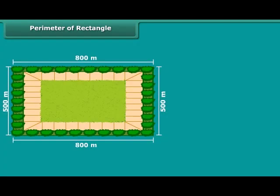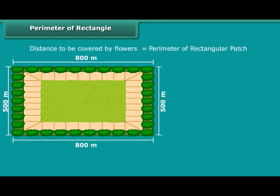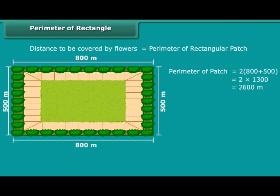We wish to plant flowers on all sides of a rectangular patch of land whose length is 800 meters and breadth is 500 meters. Calculate the total distance to be covered by flowers. The distance to be covered will equal the perimeter of the rectangular patch. The perimeter of the rectangular patch is 2,600 meters. Therefore, the total distance to be covered by flowers is 2,600 meters.